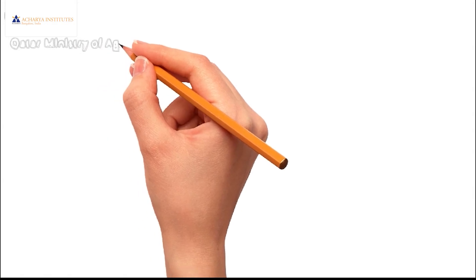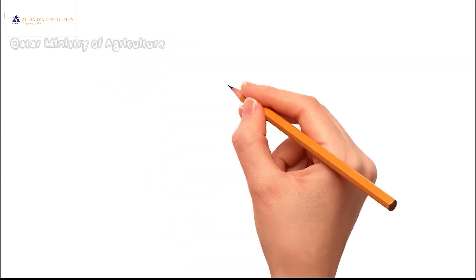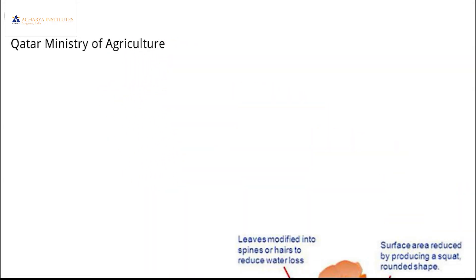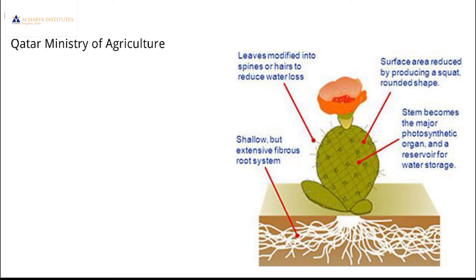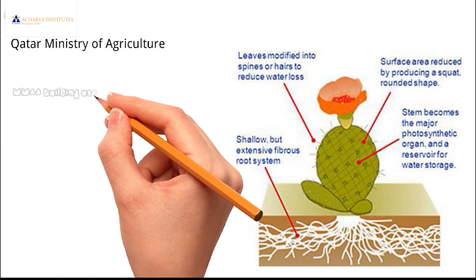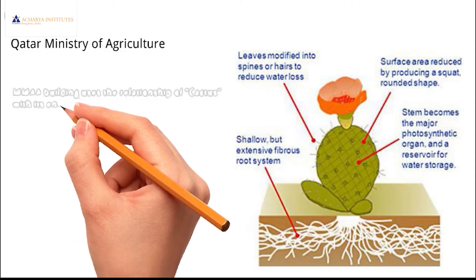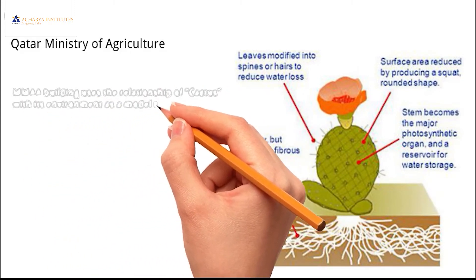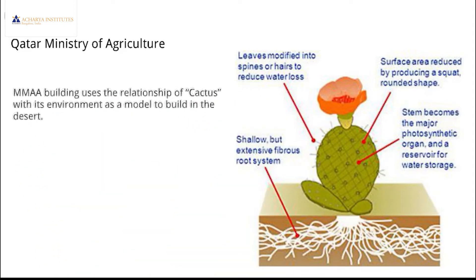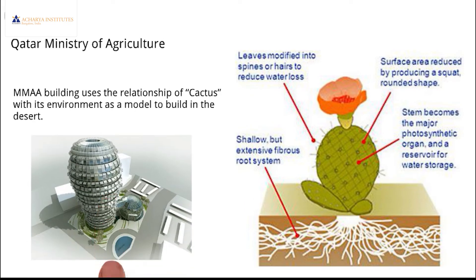Our next example would be the Qatar Ministry of Agriculture, which is based in Qatar. The building uses the relationship of a cactus with its environment as a model to build in the desert. The sunshades on the windows are exposed to night swelling instead of daytime to keep the water warm, as well as turning on and off in response to heat.